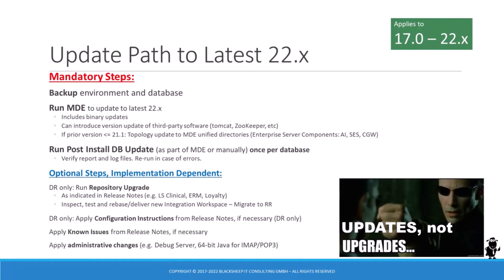Let's review the mandatory and optional steps for a successful update to the latest Siebel release. First, it is highly recommended to make a backup of the entire environment and the database. Then the modular deployment engine needs to be run — it will lay down the new files to disk. If your Siebel version is 21.1 or older, you will also get a topology update to the MDE's unified directory structure, applying to any enterprise server component such as AI, Siebel server, or gateway. It is also mandatory to run the post-install database update, which can be run automatically as part of the MDE or manually after the MDE finishes copying the binaries. This has to be executed once per database and applies schema changes, imports seed data and OpenUI manifest data into the target database. Make sure to check the post-install DB update HTML report and log files, and re-run in case of errors before you continue.